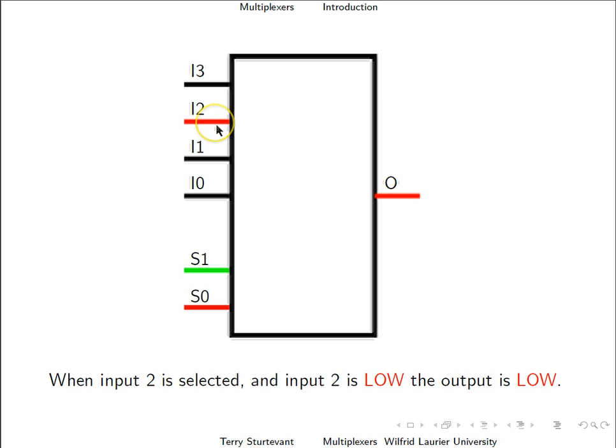When input 2 is low, the output is low. So the output follows input 2 as long as the select is 1,0, which means input 2.